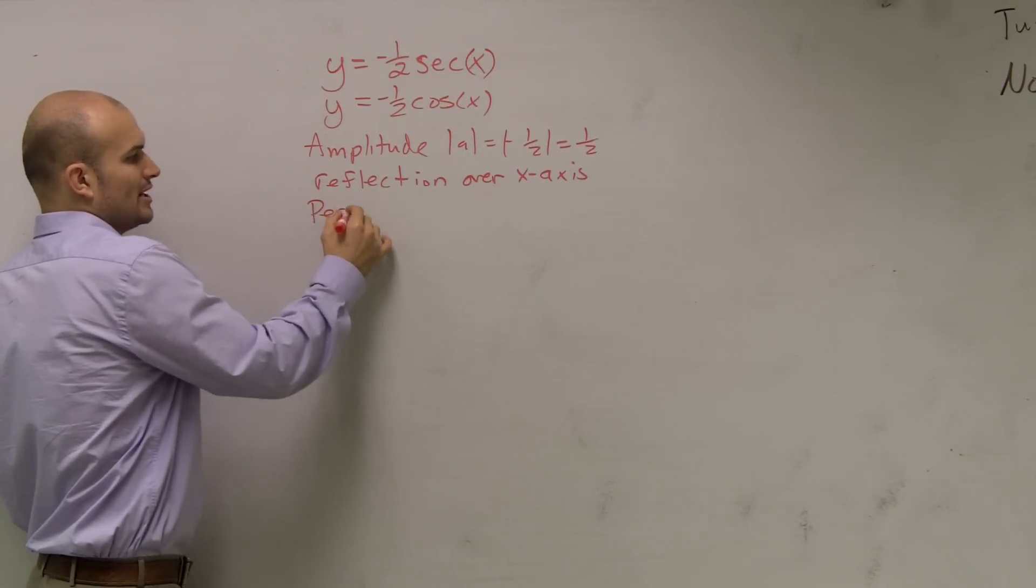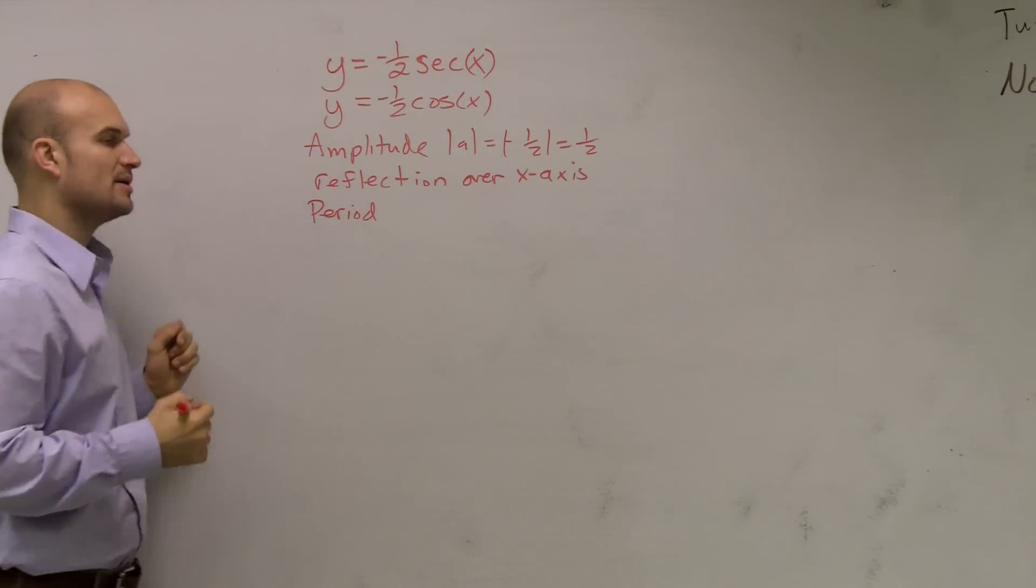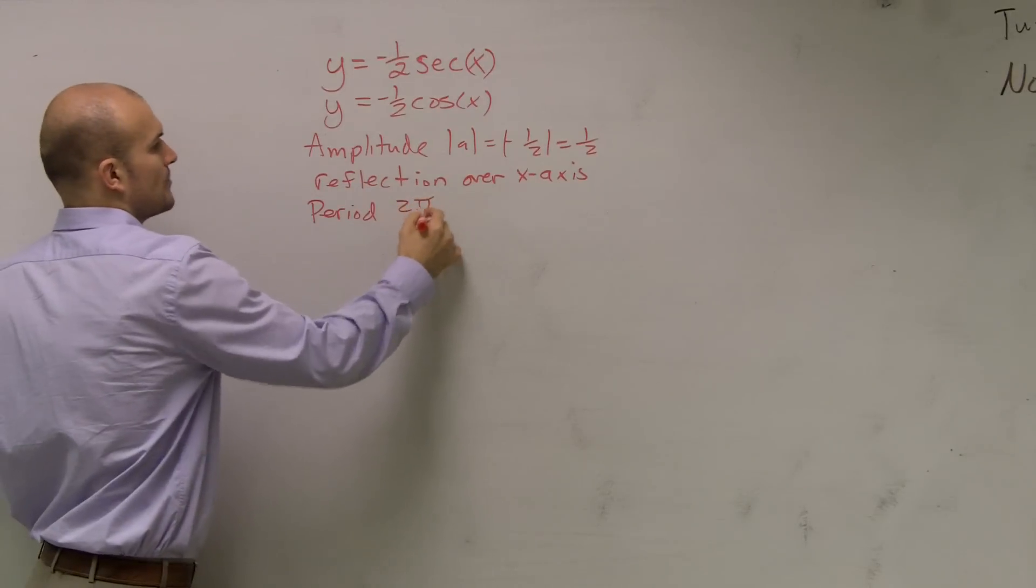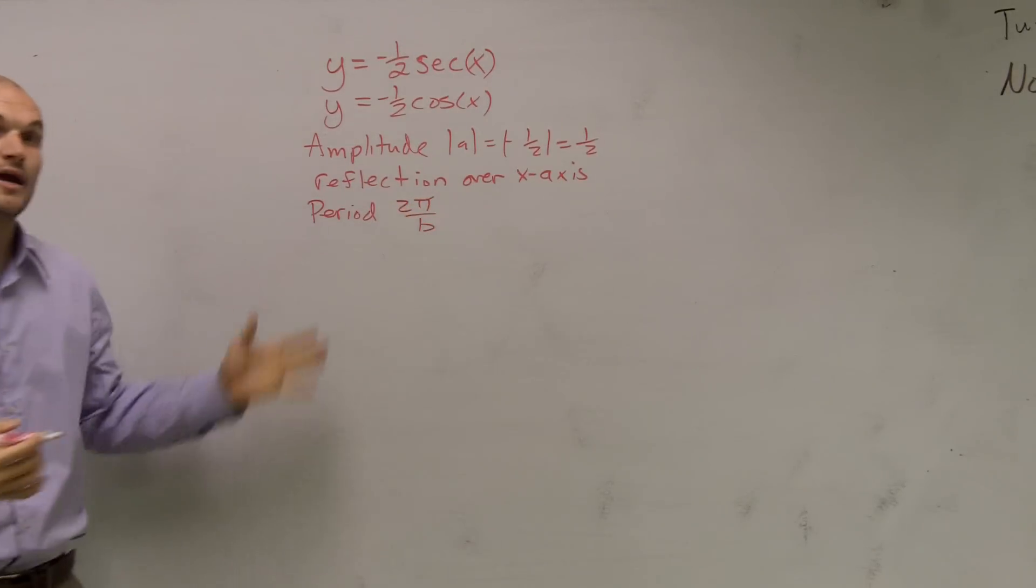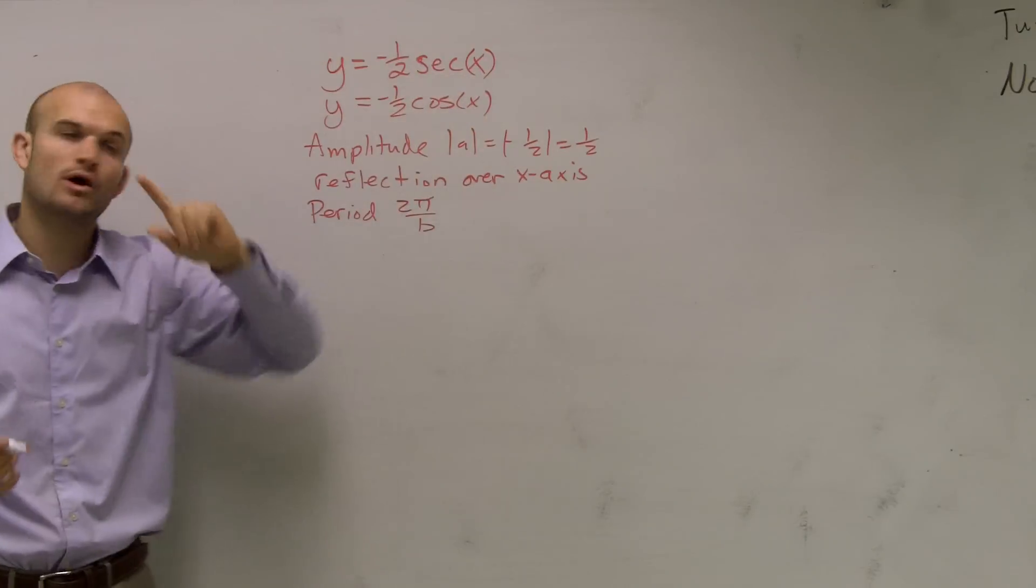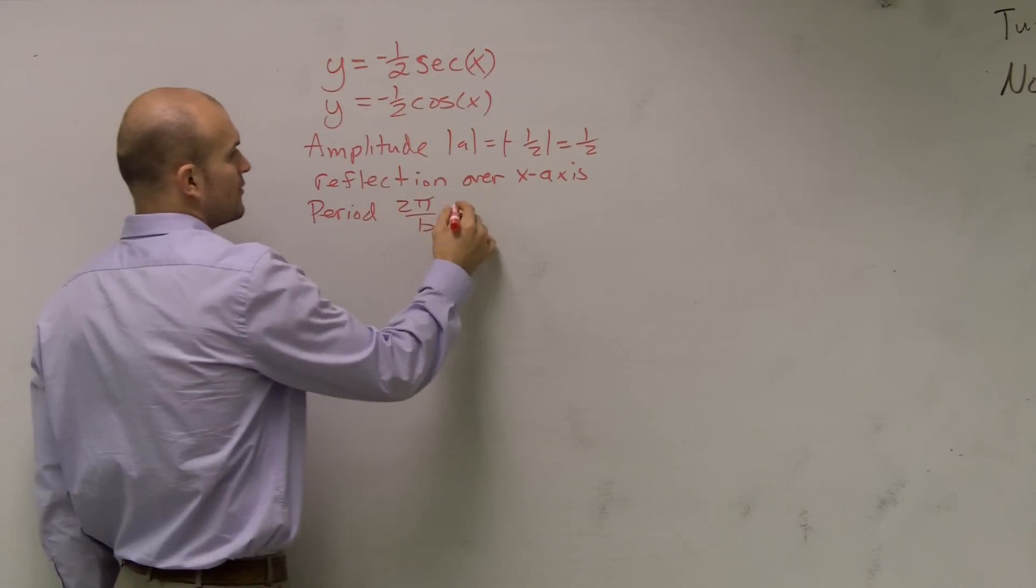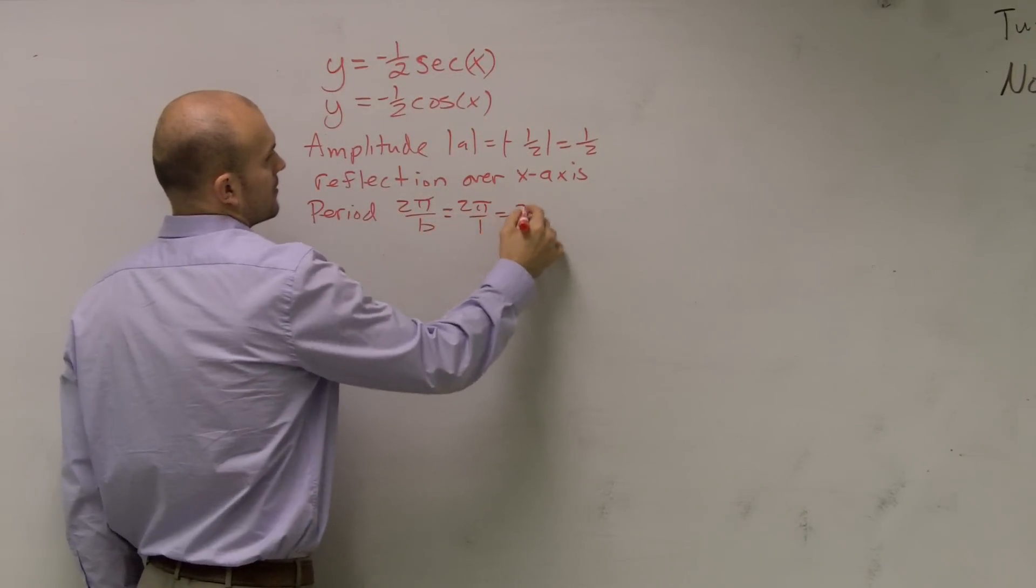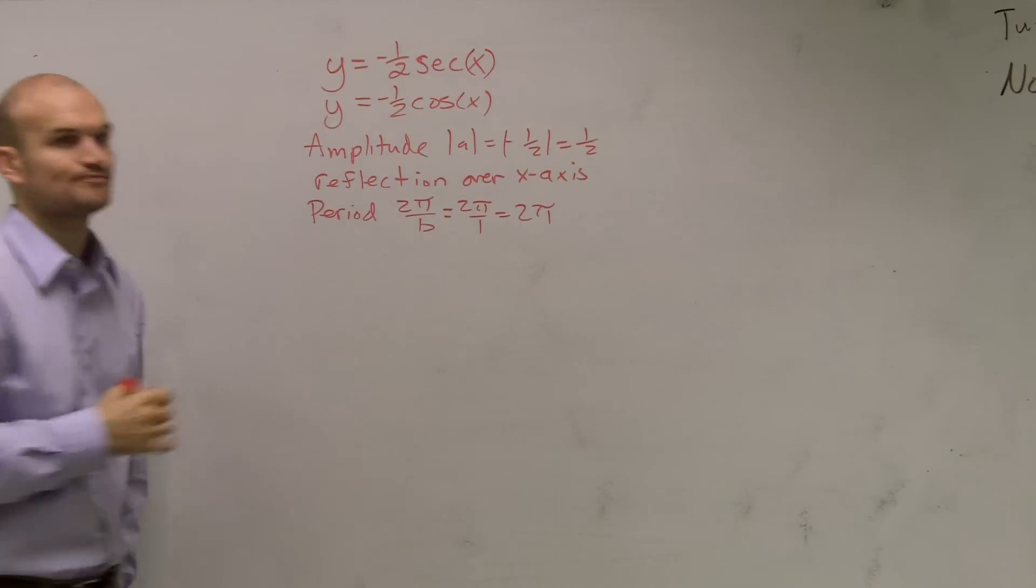The next thing we need to do is look at our period. Our period is 2π over b. Remember, b is the number in front of your x. In this case it's 1, so we have 2π over 1, which is 2π.